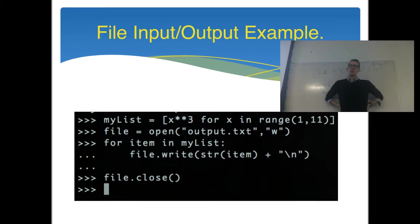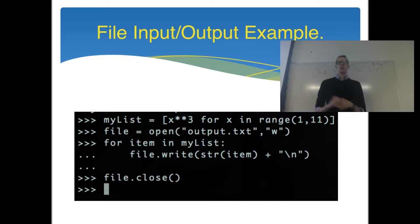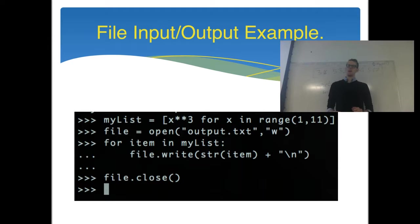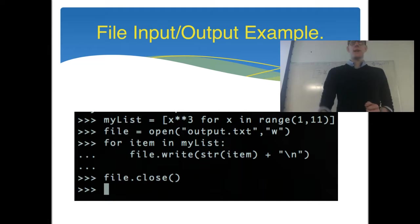What am I writing to the file? I need to convert each item to a string, because .write expects a string as input — if you try to write a number directly it will give you a type error. So we convert each number to a string using str(), then concatenate it with a newline character using backslash n. This way the first number goes on one line, the next number on the next line, and so on. We have an extra enter to indicate we're done with the for loop.